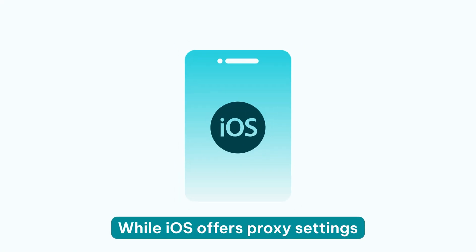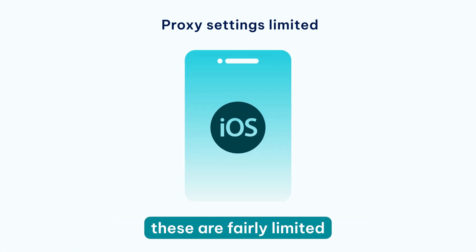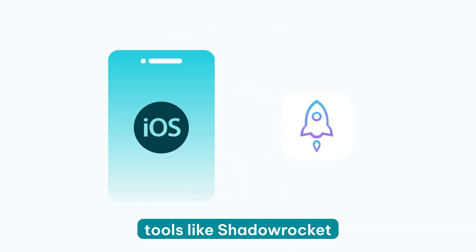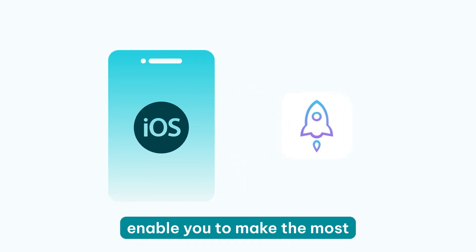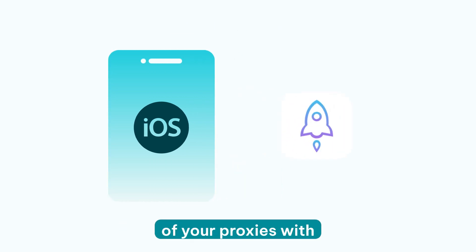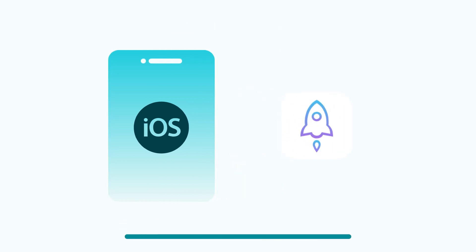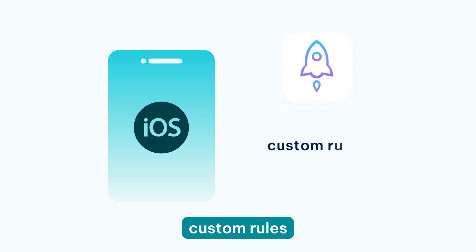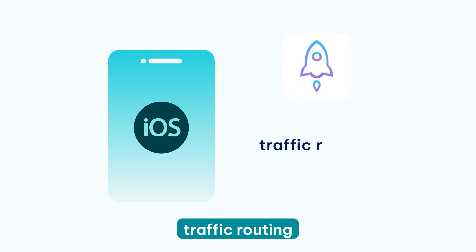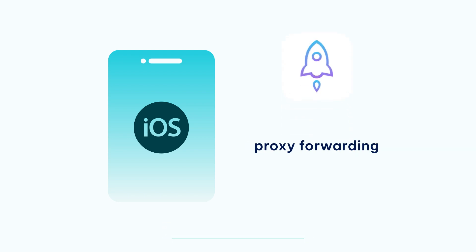While iOS offers proxy settings, these are fairly limited. Fortunately, tools like ShadowRocket enable you to make the most out of your proxies with plenty of advanced options. You can use custom rules, traffic routing, proxy forwarding, and much more.